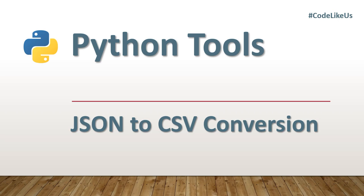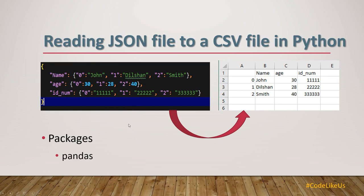Hello everyone, today we come up with a very simple and quick Python tool which converts a JSON file into a CSV file. Last time we converted a JSON file into a text file, so this time we will do CSV conversion. In this example, you can see a JSON file which contains some names, ages, and ID numbers — three data points each — and we need to convert it into a CSV file with a name column, age column, and ID column. This kind of JSON file can be easily converted using the pandas package.